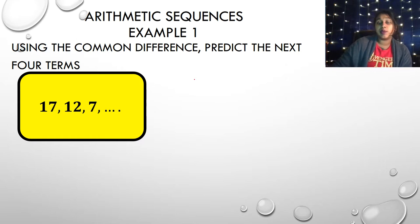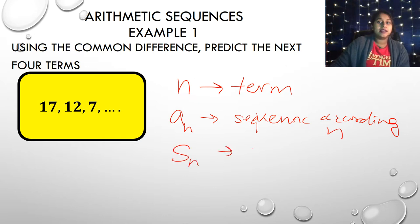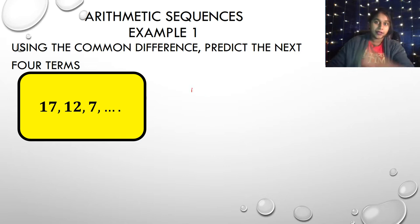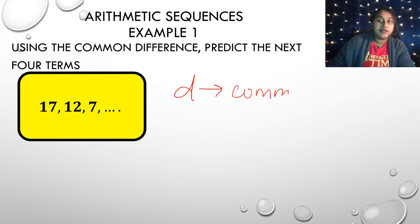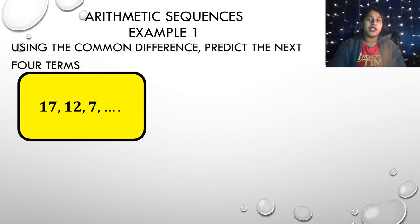We've learned a lot of new notation: N is our term; A sub N is the sequence value at term N; S sub N is a partial sum; sigma notation means series. Now we've learned D, the common difference, which is only found in arithmetic. Next time we'll also learn R, the geometric ratio, representing multiplication or division.